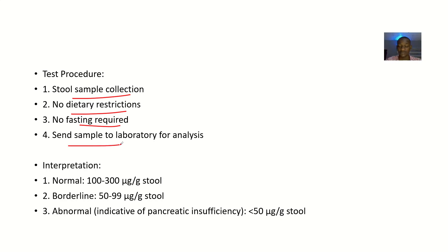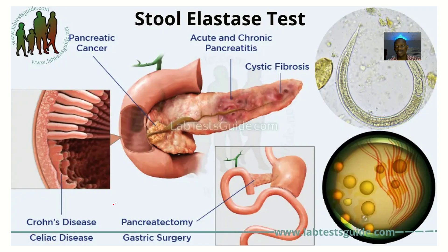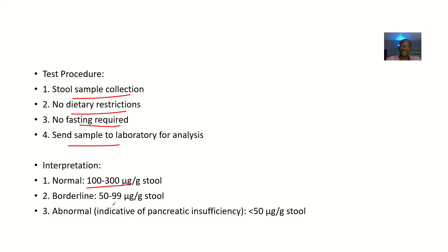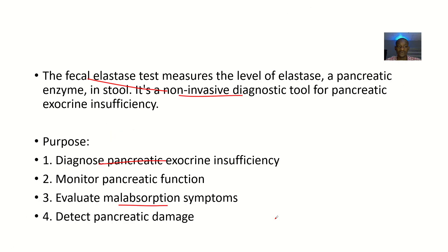When the results come back, interpretation is as follows: 100 to 200 micrograms per gram of elastase in stool is normal. A level of 50 to 99 is borderline. If there is pancreatic insufficiency, the elastase enzyme level will be below 50 micrograms per gram.